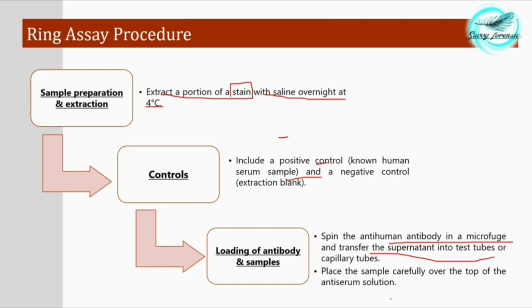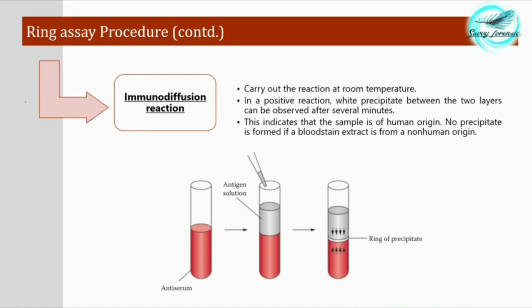Place the sample carefully over the top of the antiserum solution, as it is the lighter phase. If the sample contains human antigen, a ring of precipitate will form at the junction. The immunodiffusion reaction is carried out at room temperature, and in a positive reaction a white precipitate between the two layers is observed after several minutes, confirming the sample is of human origin. A non-human sample will yield no precipitate.